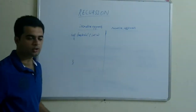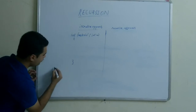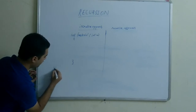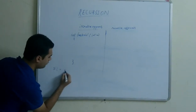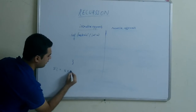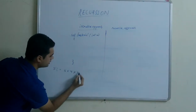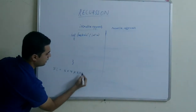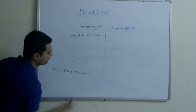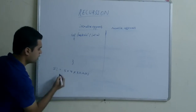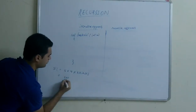For calculating factorial, if I need to calculate 5 factorial, then what I need to do is: from 5, I will multiply 4, after that I will multiply 3 with the product, after that 2, and finally 1. So this comes to 120.